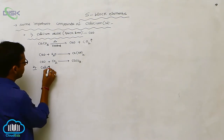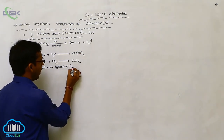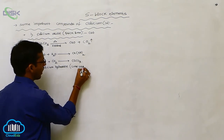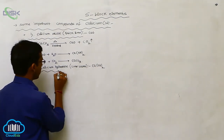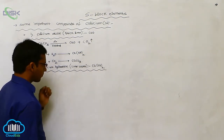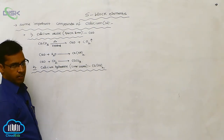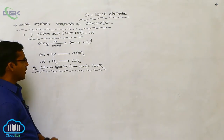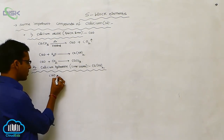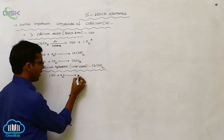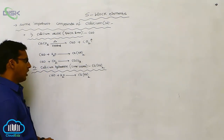The next compound is calcium hydroxide, Ca(OH)₂, which is called lime water. Calcium hydroxide is prepared by the addition of water to calcium oxide or quick lime. Calcium oxide is mixed with water to produce calcium hydroxide. This is the preparation method of lime water.